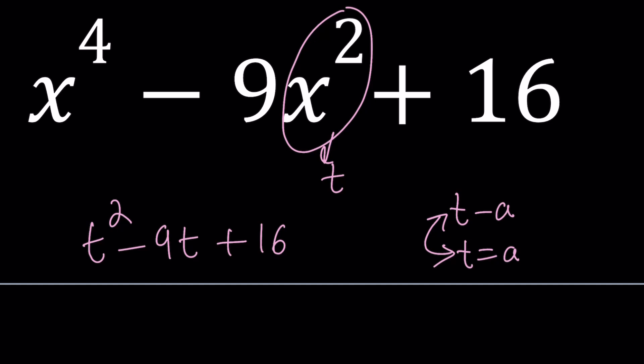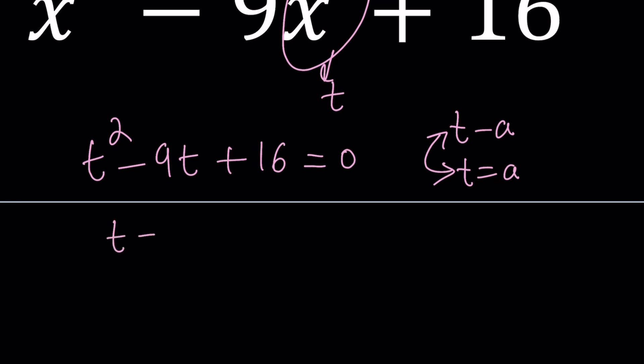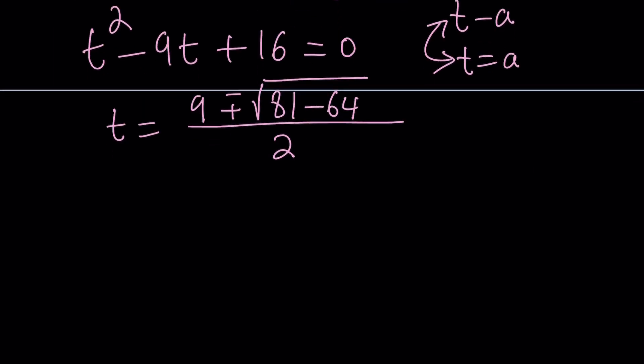So, let's go ahead and solve this as a quadratic equation. That's easy, right? From here, we get t equals negative b plus minus the square root of b squared, which is 81, minus 4ac, which is 64, right? 4 times 16, divided by 2. So, that's going to be an irrational number, 9 plus minus the square root of 17, divided by 2.